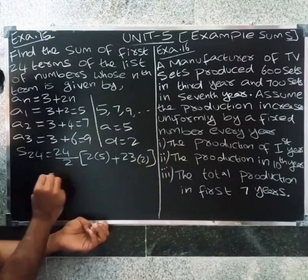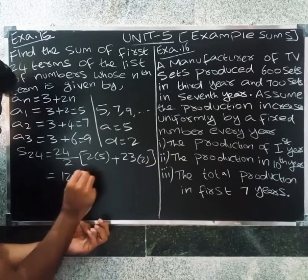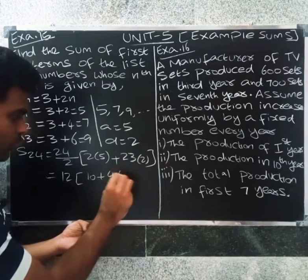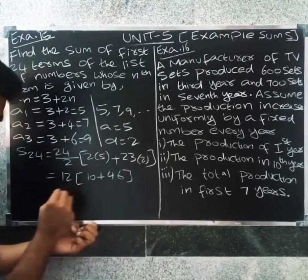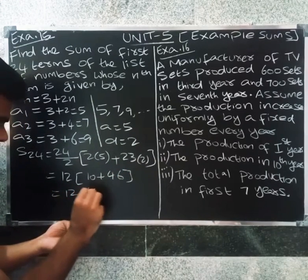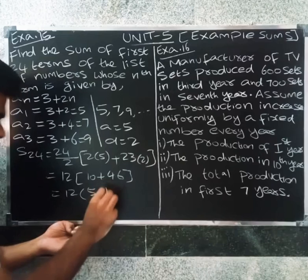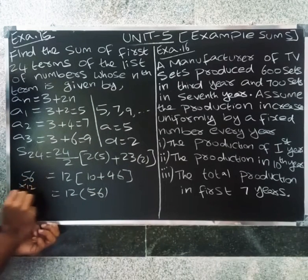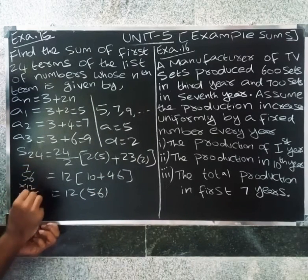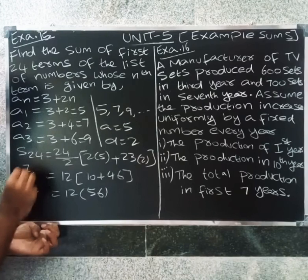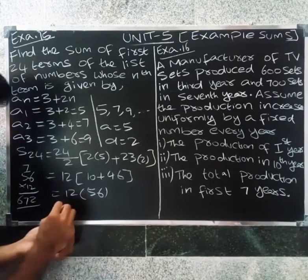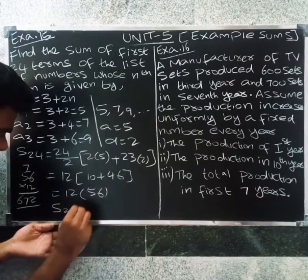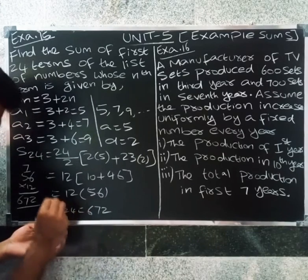So 24 by 2 equals 12. And 2a is 10. Then 23 into 2 equals 46. So we get 12 into 56. Computing 56 into 12: 6 into 2 is 72, plus 60, giving 672. So S24 equal to 670.